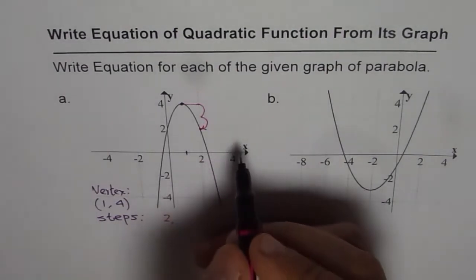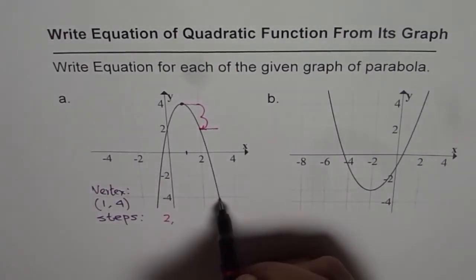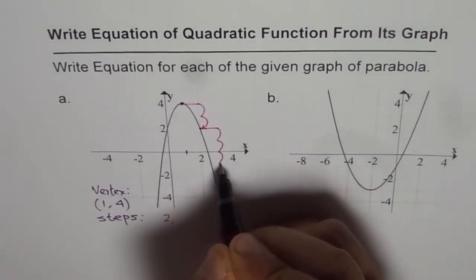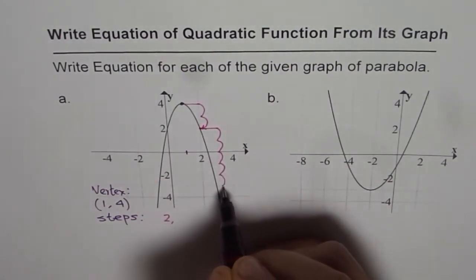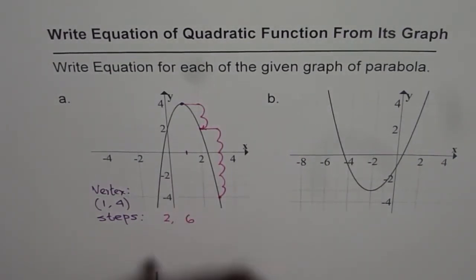This is the first step. If I move one more unit here, then for the next point, how many steps do I go? So it is 1, 2, 3, 4, 5, and 6. So it is 6 steps. So the steps are 2 and 6.